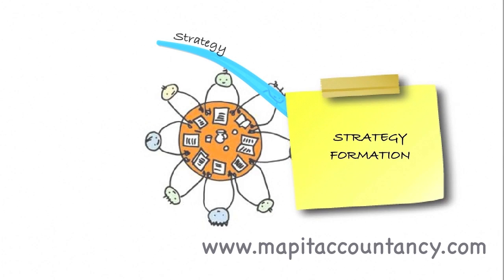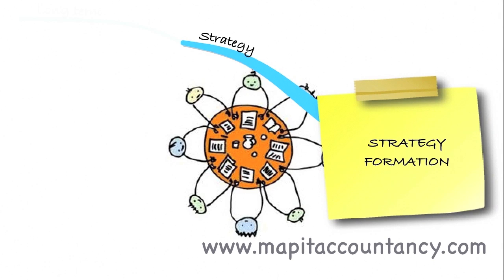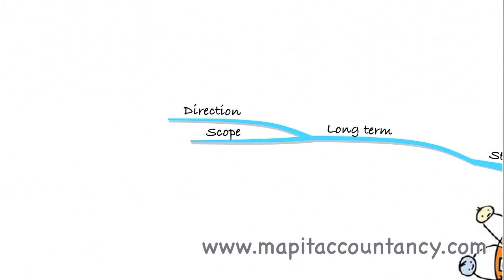Strategy is defined by Johnson, Scholes and Whittington — three authors who wrote a book called Exploring Corporate Strategy — as the long-term direction or scope of the firm. We're not really thinking about short-term decisions; those are simply decisions, rather than a strategy for the direction that the firm should take.